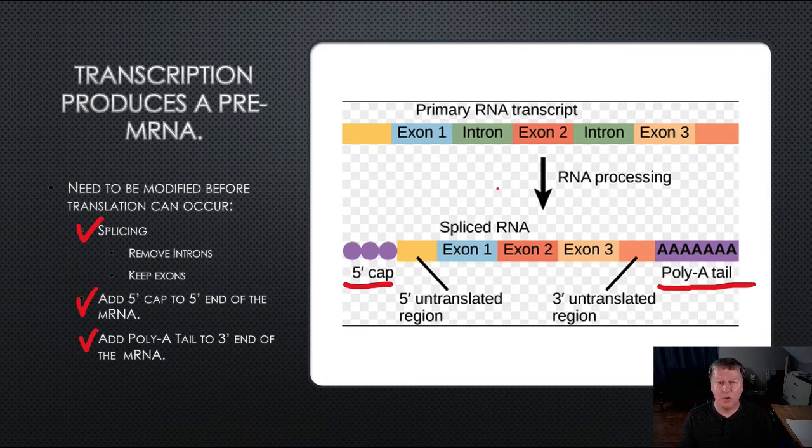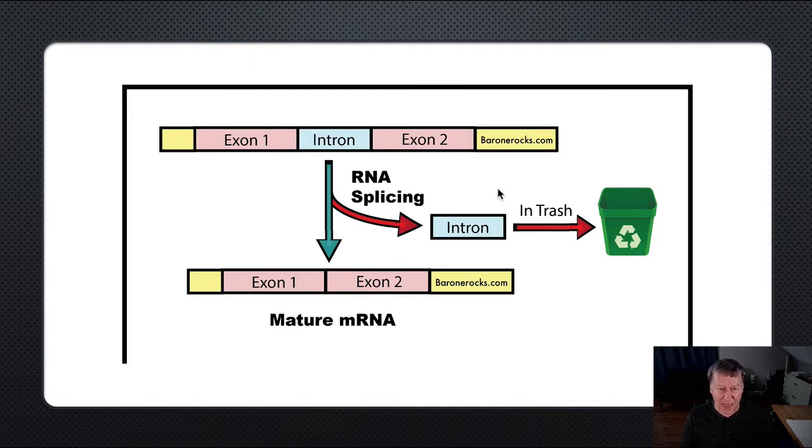But what are these introns and exons and what do they do? To understand that, we need to realize that the gene, the code for how to make a protein, contains different sections. Some of those sections are called introns and some of them are called exons. Introns contain sections that do not code for the protein. Exons, on the other hand, contain sections that do code for a protein.